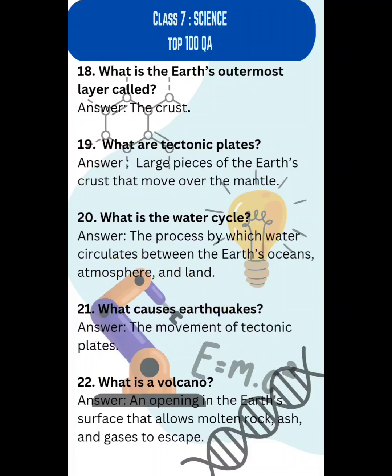20. What is the water cycle? Answer: The process by which water circulates between the earth's oceans, atmosphere, and land.